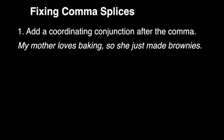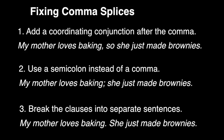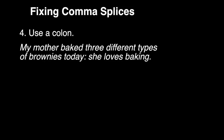If you find a comma splice and need to fix it, there are a few ways you can do it. The first way is to add a coordinating conjunction after your comma — like: 'My mother loves baking, so she just made brownies.' Another way is to take out the comma and use a semicolon: 'My mother loves baking; she just made brownies.' Another way to fix it would be to make them both separate sentences: 'My mother loves baking. She just made brownies.' And one last thing you can do — if the second clause expands upon or clarifies the first — you could use a colon: 'My mother baked three different types of brownies today: she loves baking.' So that works also.